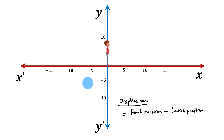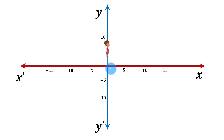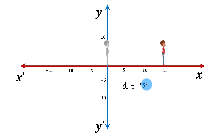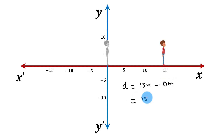Suppose a boy is standing at the origin. If he moves 15 meters towards the right, or positive direction of the x-axis, his final position is 15 meters and initial position is 0 meters. In this case, if we denote displacement by D, his displacement is 15 meters, which is final position minus 0 meters, which equals 15 meters.